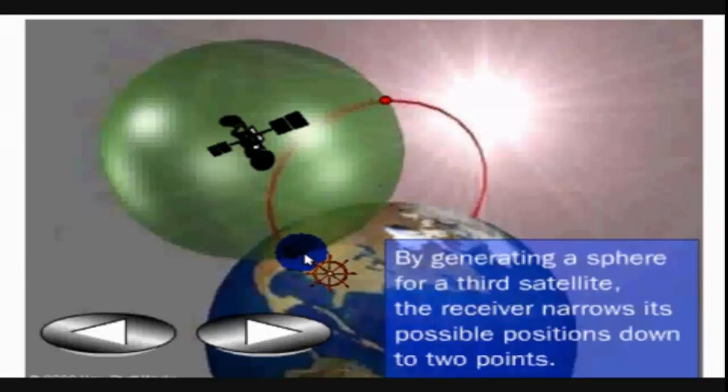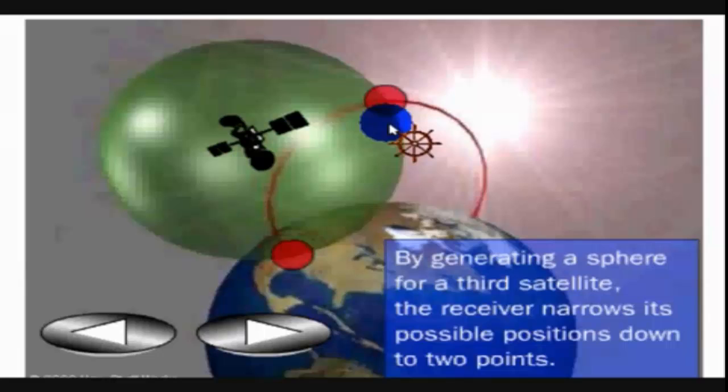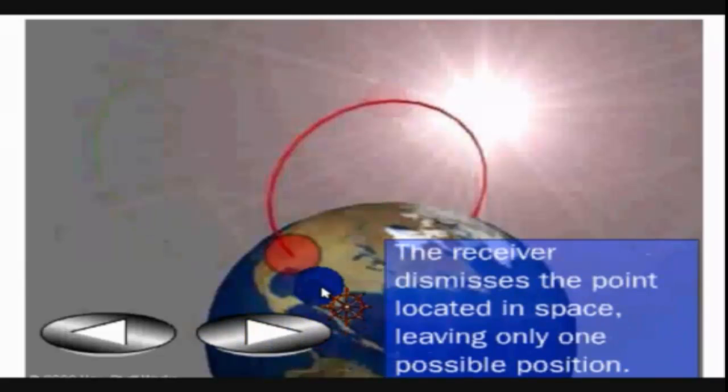This means that only this point is the position of the GPS receiver, because it is on the surface of the Earth in the United States, while the other point is in space. We can dismiss the space point. So this is the location of the GPS receiver.